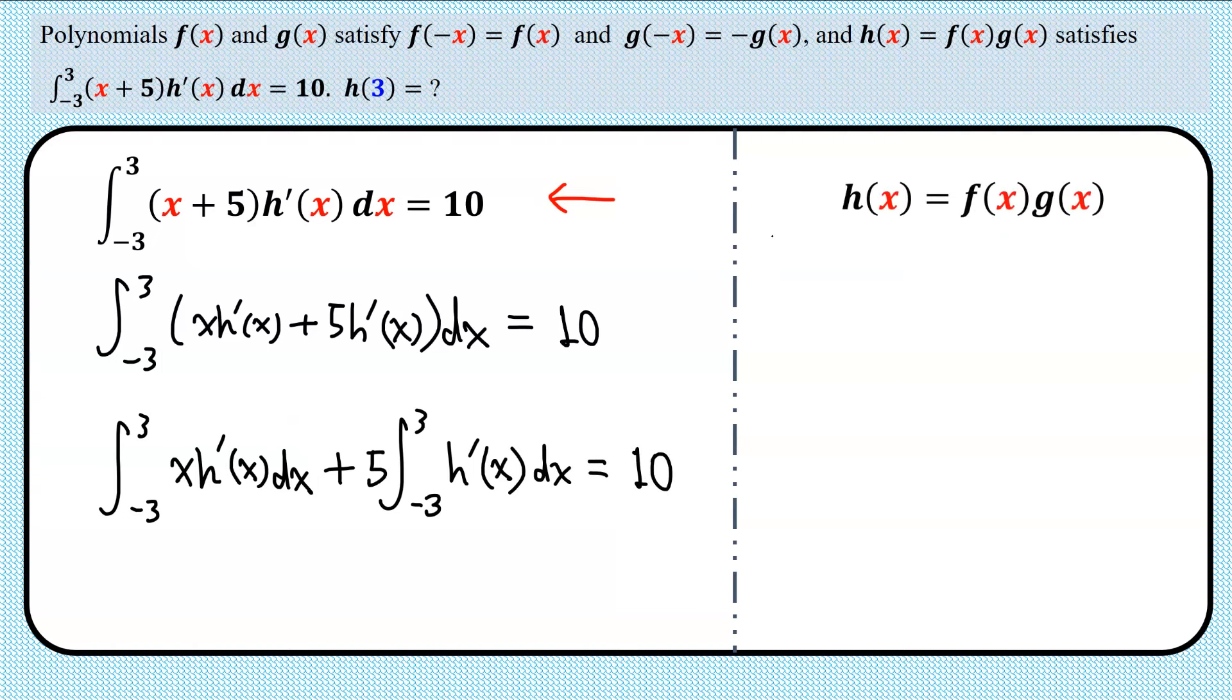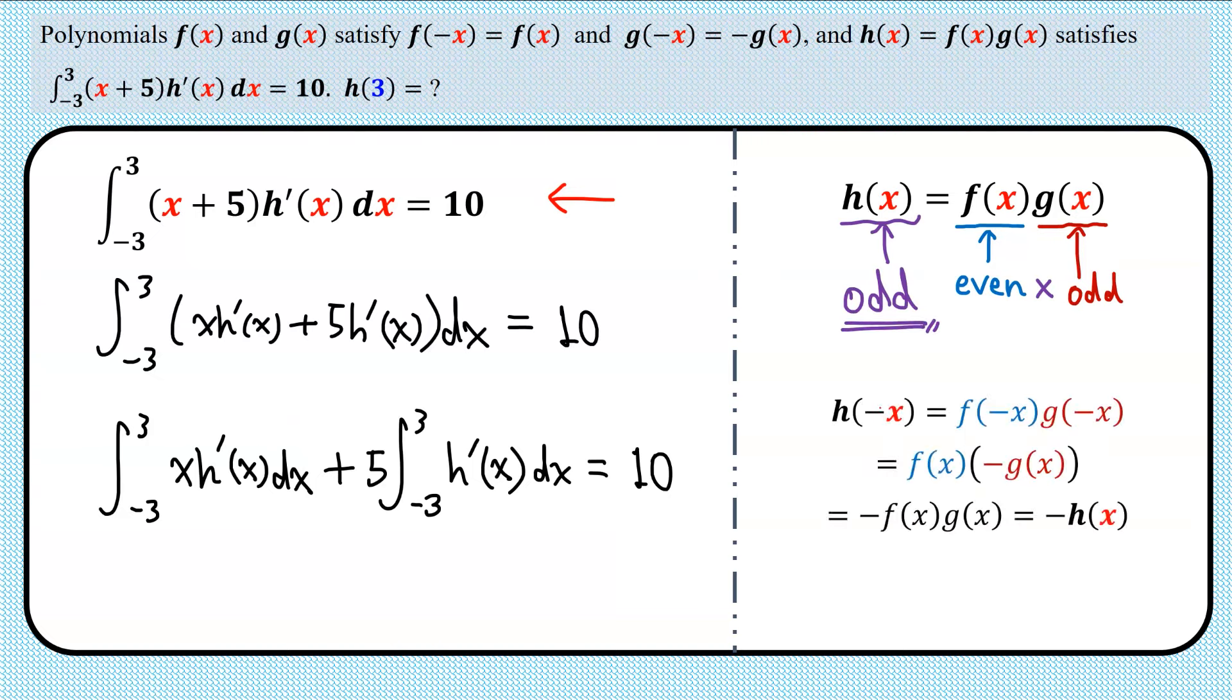Now is the time to finally address the way that the function h(x) is defined. We know that f(x) is an even function and g(x) is an odd function. If an even function and an odd function are multiplied, we obtain an odd function, so h(x) is an odd function. You can easily show this by substituting x with -x in h(x), and that results in -h(x).